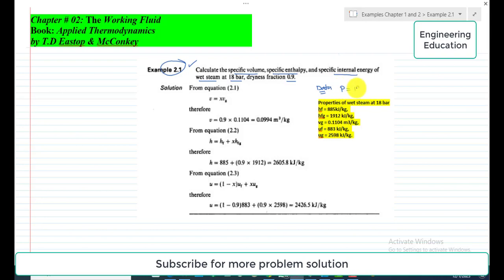Which is 18 bar, and second, dryness fraction which is x = 0.9. And we have to find three things: first,